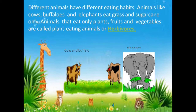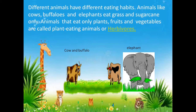Different animals have different eating habits. Just like in your home, if you have an elder sister, younger sister, brother, daddy, grandparents — it is not possible that everybody likes to eat the same thing. Everyone has their own favorite.